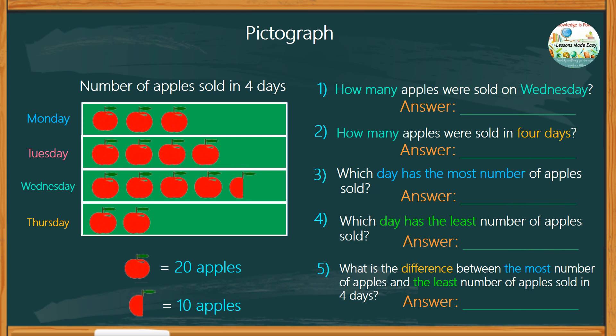Let's work on the first one. From the given data, there were 90 apples sold on Wednesday. Let's see how many apples were sold in 4 days. 60 apples on Monday, 80 apples on Tuesday, and 40 apples were sold on Thursday. In total, there were 270 apples sold in 4 days.